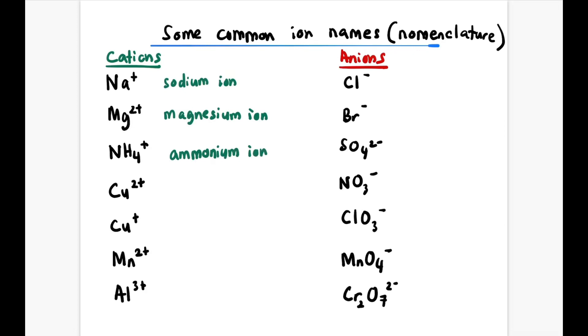And then Cu2+ is copper(II) ion, Cu+ copper(I) ion, Mn2+ is called manganese(II) ion, and then we have Al3+ aluminum ion.